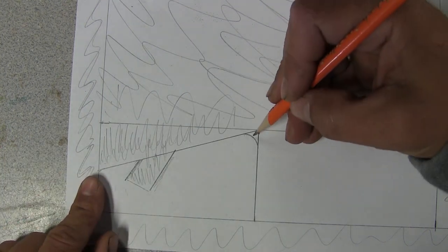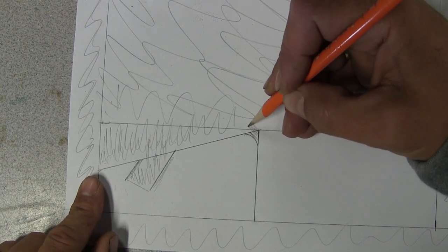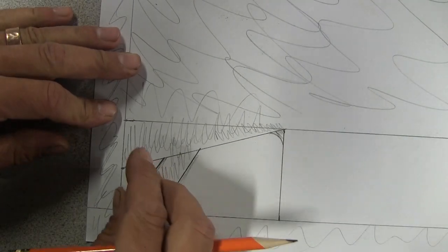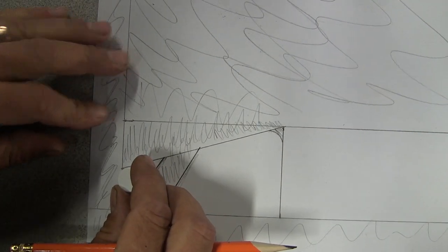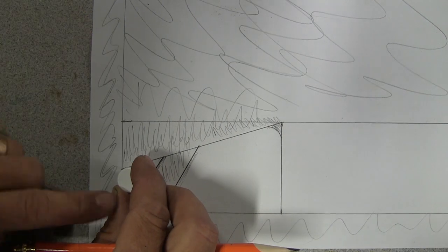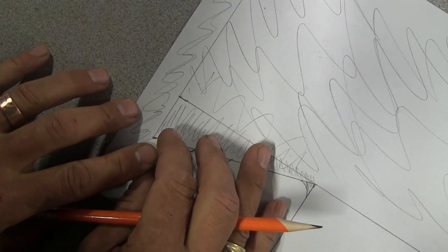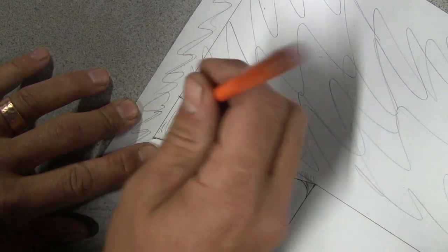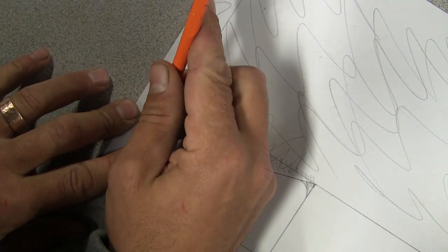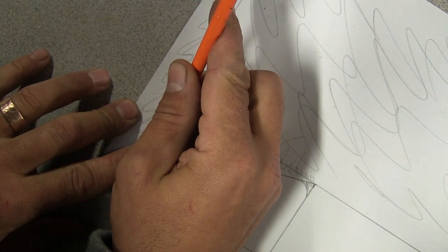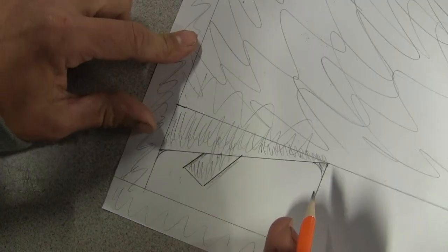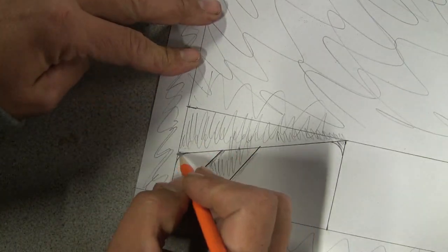As you can see there, I have some more scrap material. One more fillet on the other corner. And I'm pretty close to done. One last little place to shade in.